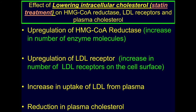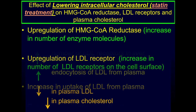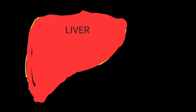In fact, this is the therapeutic strategy behind the use of statins to reduce plasma cholesterol. The inhibition of HMG CoA reductase by statins results in a decrease in intracellular cholesterol concentration, which in turn results in an increase in the gene expression of the LDL receptor. More LDL receptors on the surface of hepatocytes will endocytose more LDL from plasma, and thus reduce plasma cholesterol.